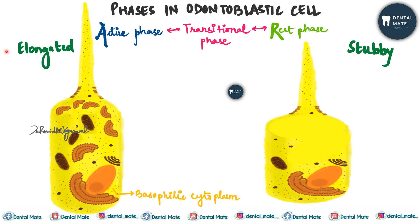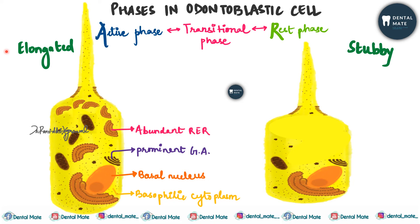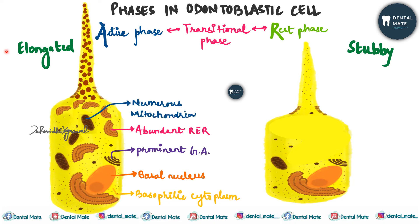The active phase odontoblast has basophilic cytoplasm with a basal nucleus, prominent Golgi apparatus, abundant rough endoplasmic reticulum, and numerous mitochondria. Along with that, many vesicles at the periphery of the processes are present, indicating protein synthesis along the tubule wall.